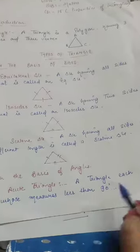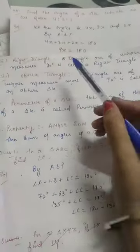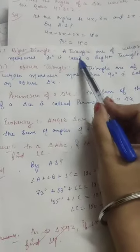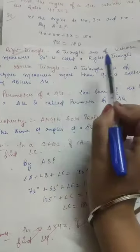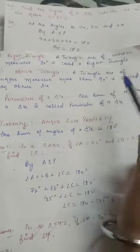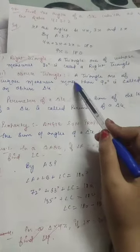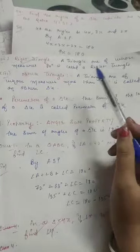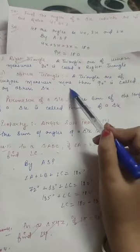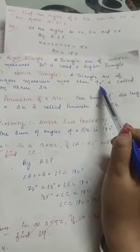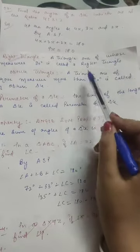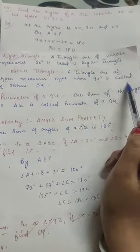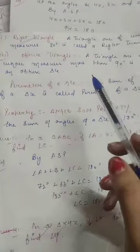Acute triangle: angles between 0 and 90 degrees. Right triangle: if you have any angle of exactly 90 degrees, we call it a right angle triangle. Obtuse triangle: angles more than 90 and less than 180 degrees — so between 90 and 180 degrees.